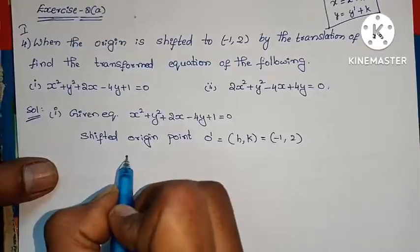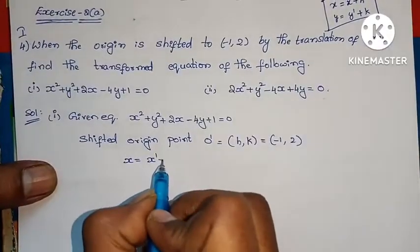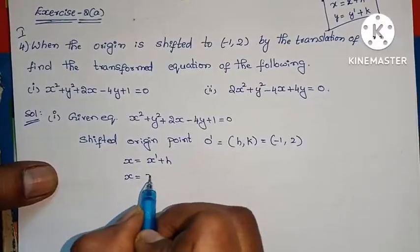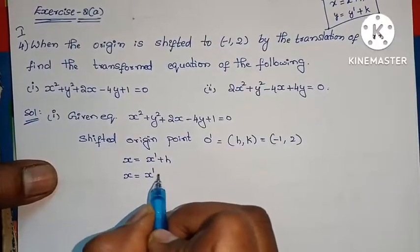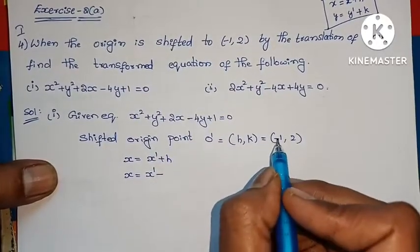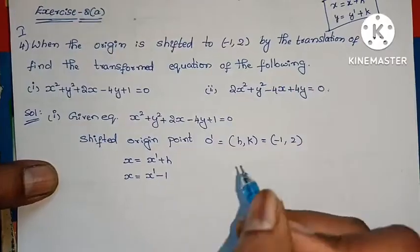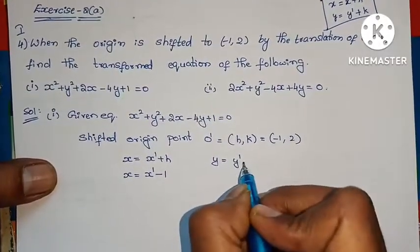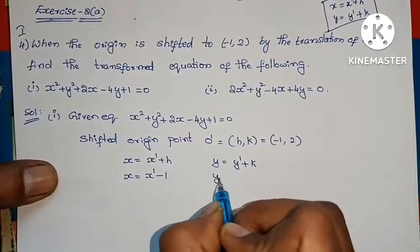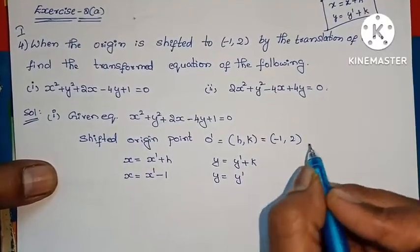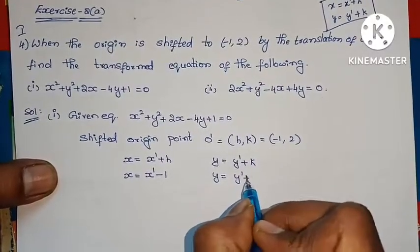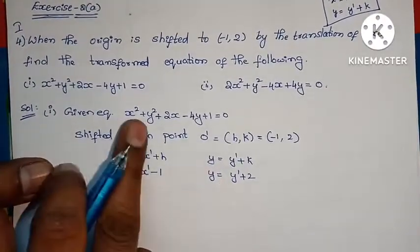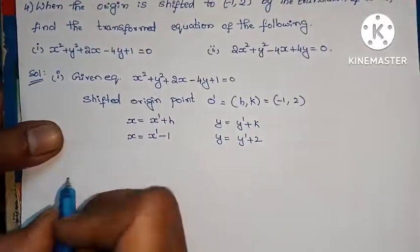Now, using the formula for x: x equals x dash plus h. Substituting h value minus 1, x equals x dash minus 1. And y equals y dash plus k; substituting k value 2, y equals y dash plus 2. Now take x value and y value and substitute in this equation.